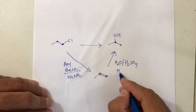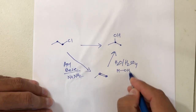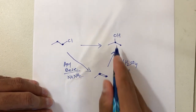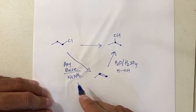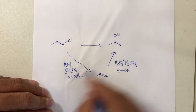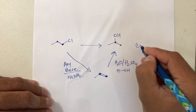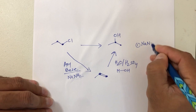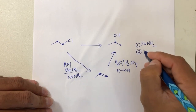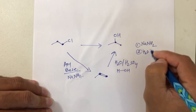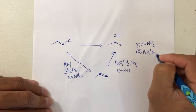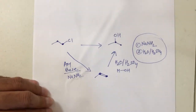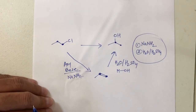Then you do the hydration of your double bond to get the product: H and OH — H will go to this carbon and OH will go to the other carbon. So the answer is: number 1 is NaNH2 and number 2 is H2O and H2SO4. That's the answer.